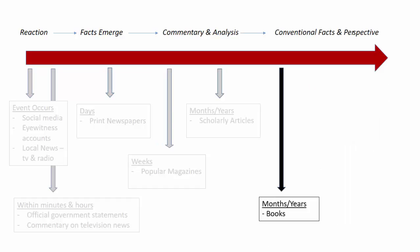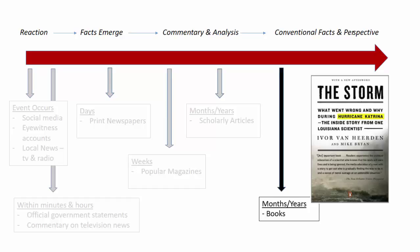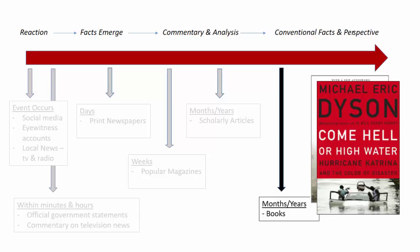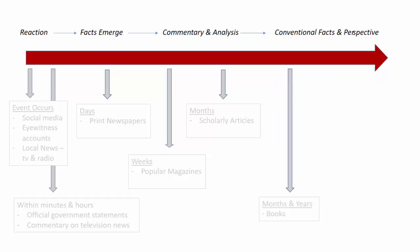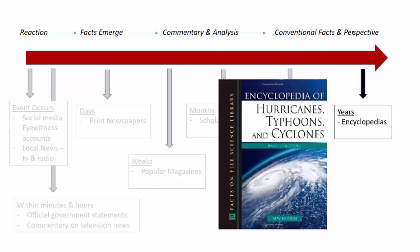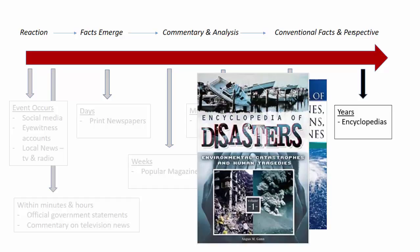Lengthier treatments of the events find their way into books, which appear months and years later. Treatments range from eyewitness accounts to in-depth scholarly analysis to children's books. Lastly, encyclopedic entries provide summary information about the events, sometimes paired with generally adopted commentary. An event's inclusion into an encyclopedia takes several years to happen, with the exception of Wikipedia, which is constantly changing.